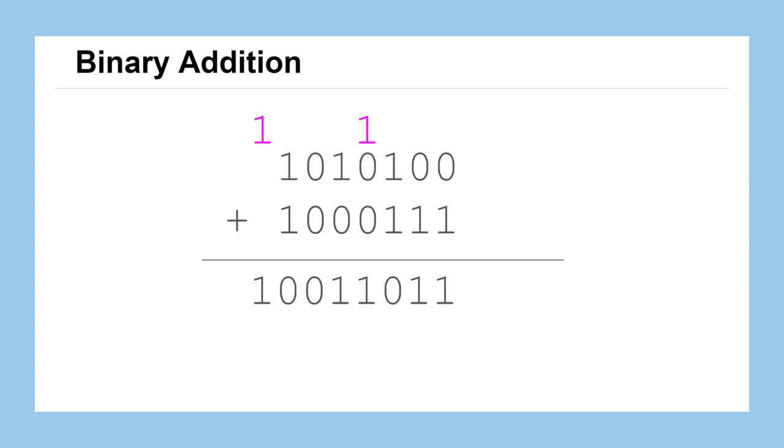Our final result here is 10011011, which is the same answer we obtained before, only in binary form. Notice our two numbers that we were adding together needed 7 bits to represent, and our final answer needed 8 bits to represent. It's not uncommon when you add two binary numbers together that the result ends up requiring more bits to represent the number.